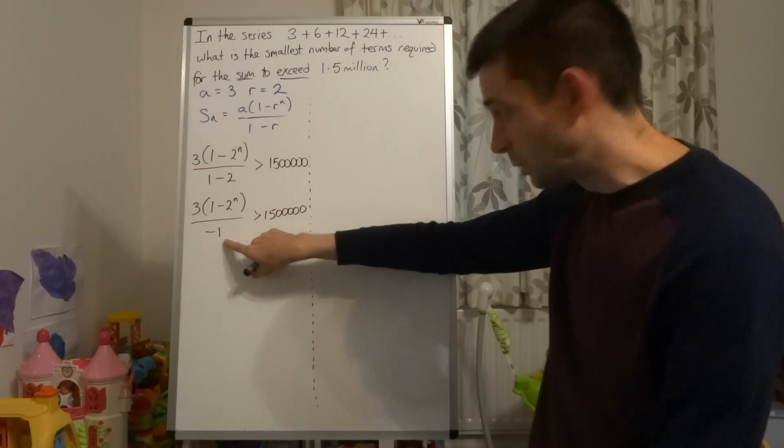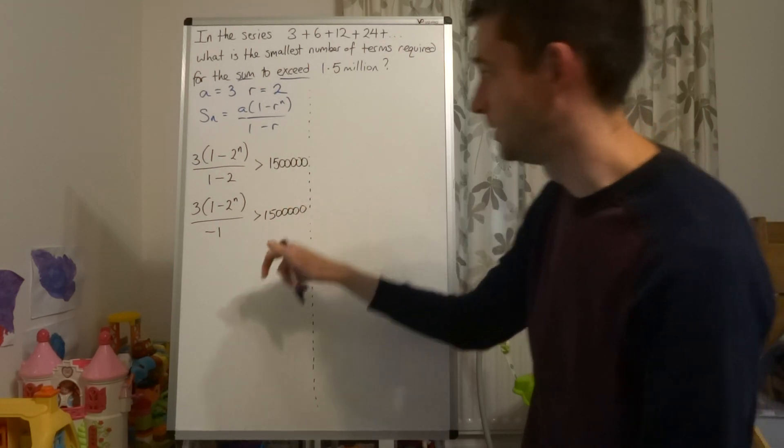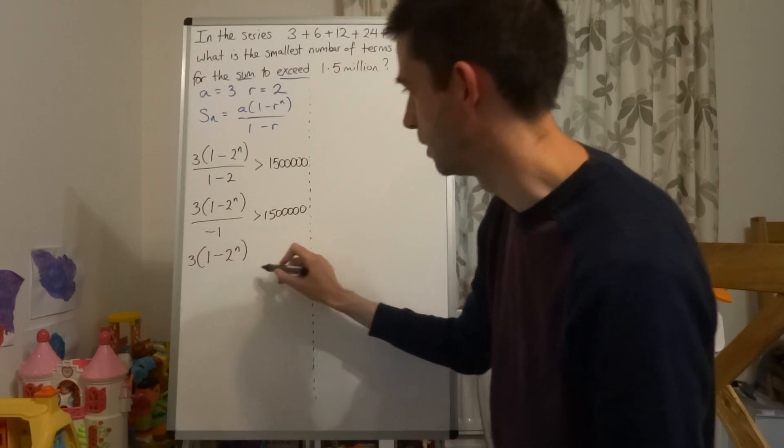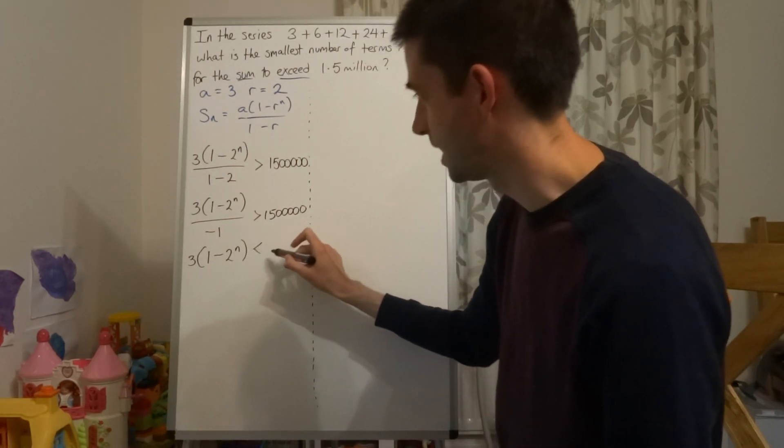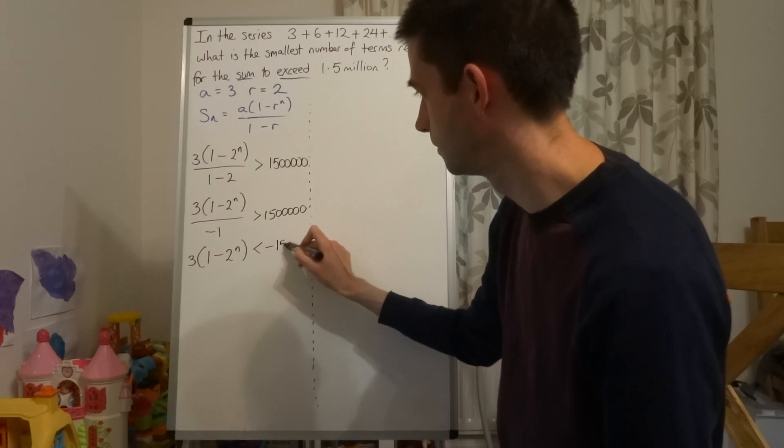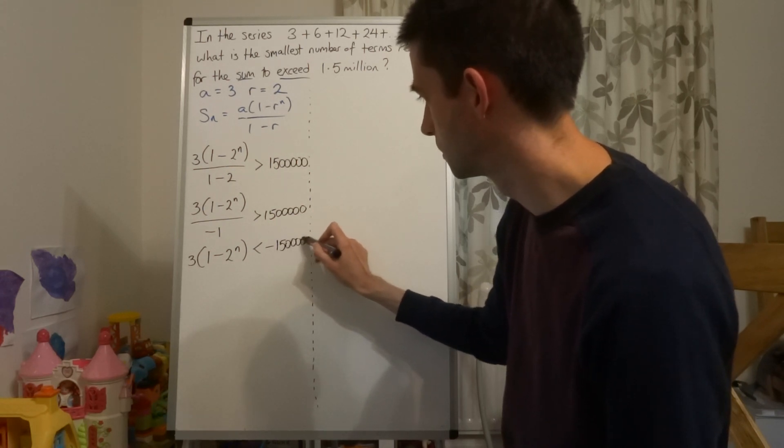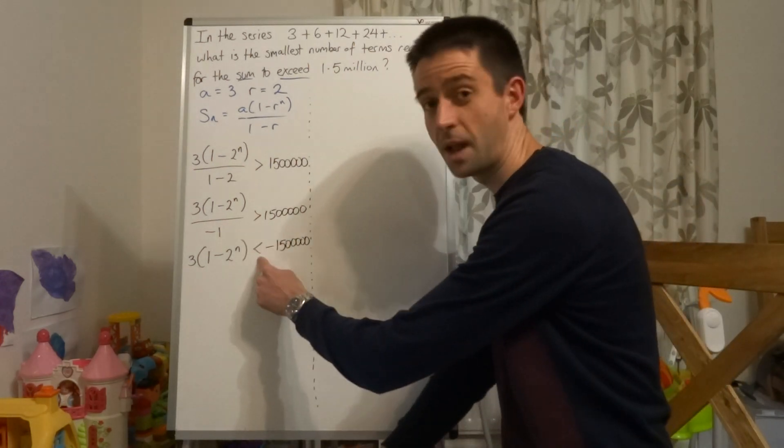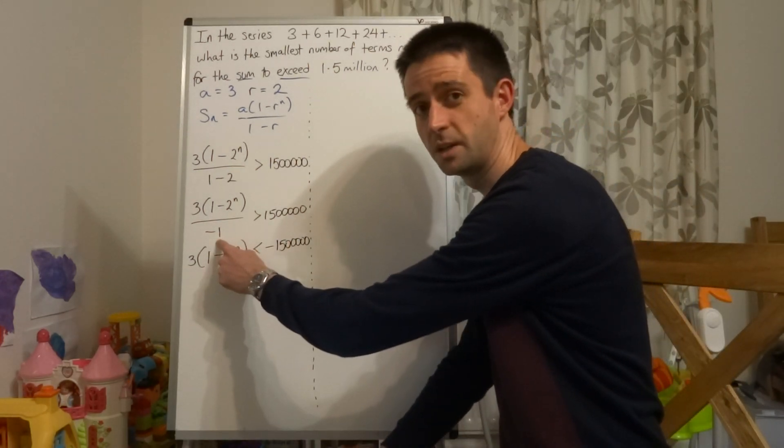We're then going to multiply both sides of this by negative 1. So we're going to have 3 lots of 1 minus 2 to the power of n is less than negative 1.5 million. And that inequality has changed direction because I've multiplied both sides by a negative.